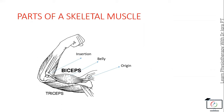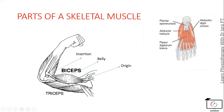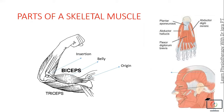The insertion can also be an aponeurosis, which is a fibromembranous structure, such as the plantar aponeurosis, or it can be present in the fleshy part, like in the frontal occipital muscle.